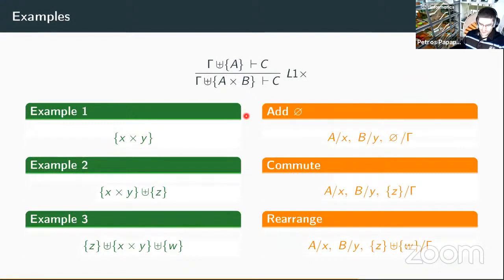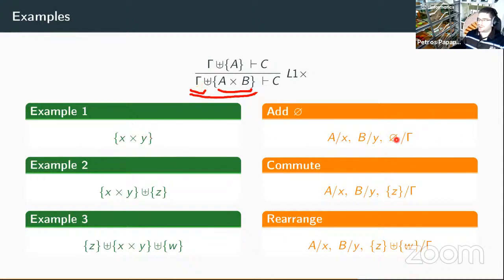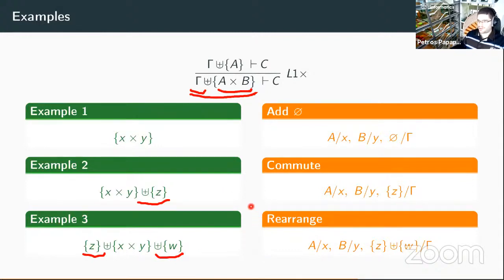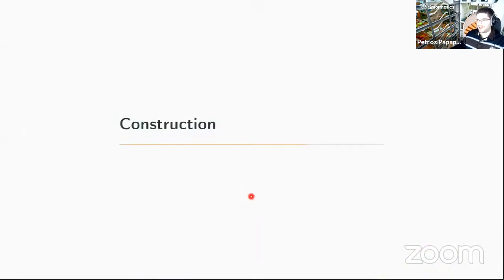Here's a quick example of how this works for variable multisets. If we have this kind of rule and try to match it to different goals, we first try the singleton part, then match the variable. This one matches x times y in this example, giving this instantiation. If gamma has nothing to match, we give it the empty multiset. If there's a leftover piece, gamma matches that singleton. If there are multiple leftover pieces, not necessarily in the right order, we rearrange and combine them to give to gamma. Multiset normalization solves any correctness issues here.